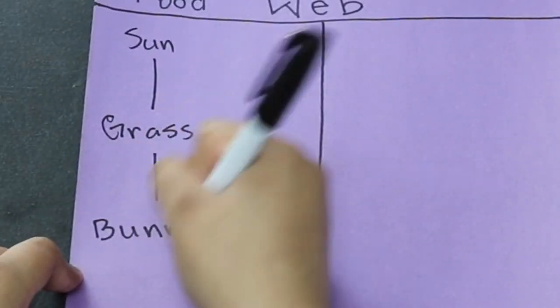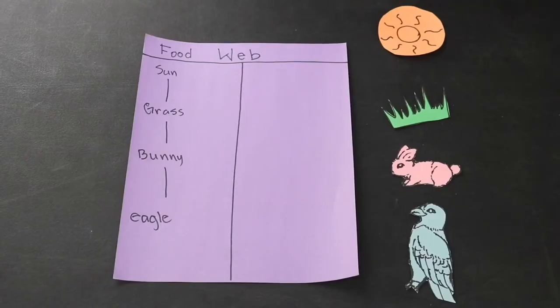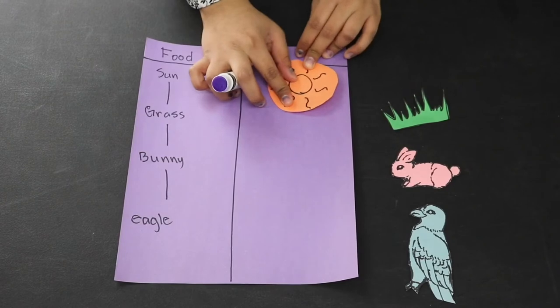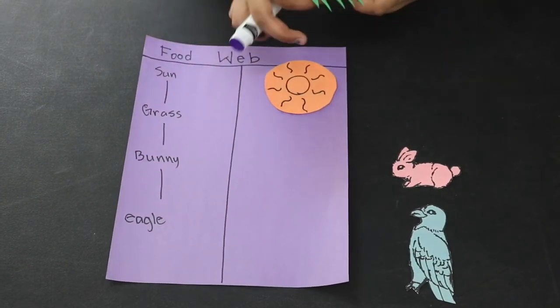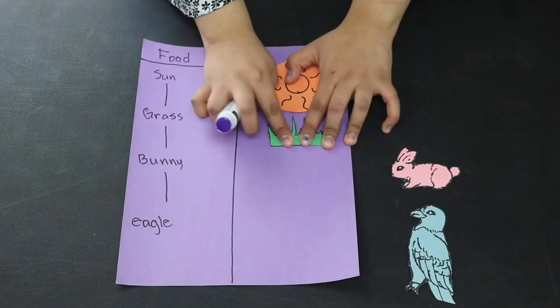Then I added the grass. The grass consumes the sun's energy. But then the bunny consumes the energy from the grass. And then lastly, the eagle consumes the energy from the bunny. You may create your food chain as long as you would like.